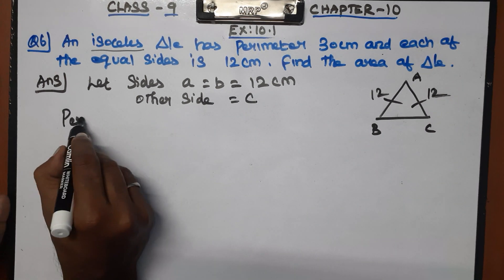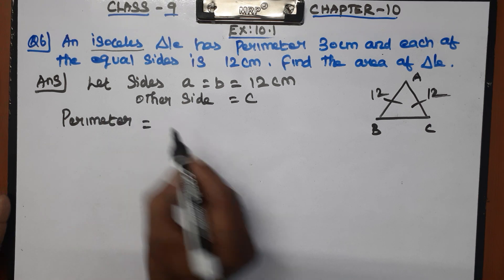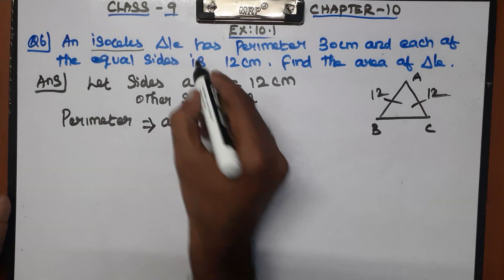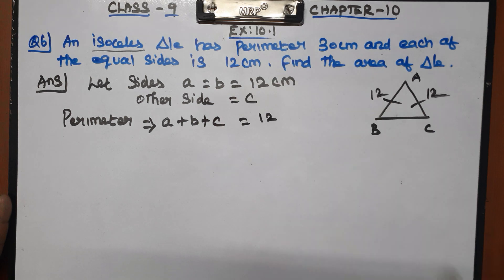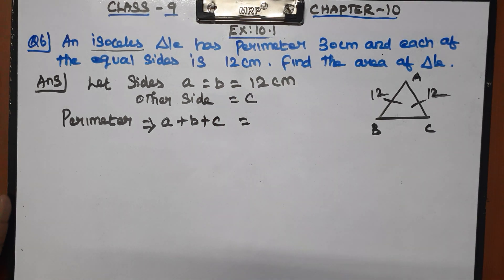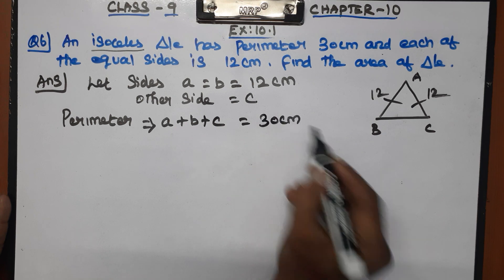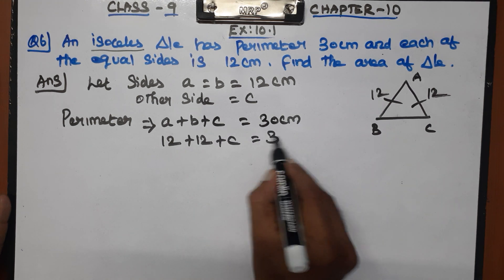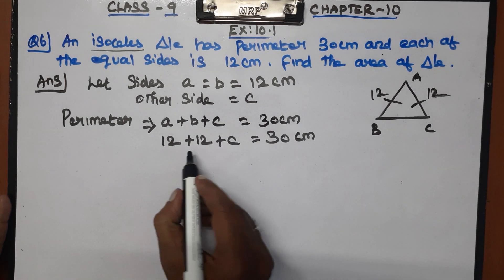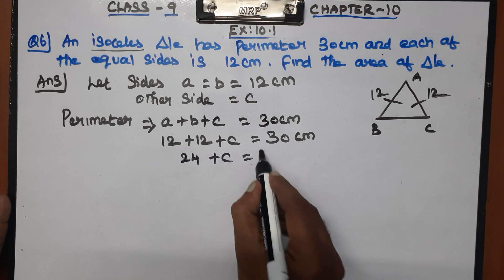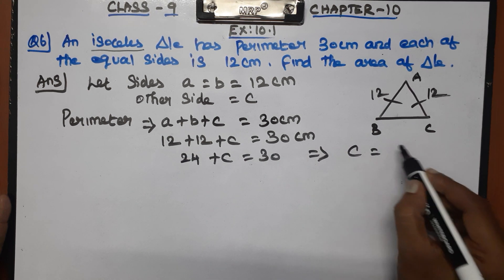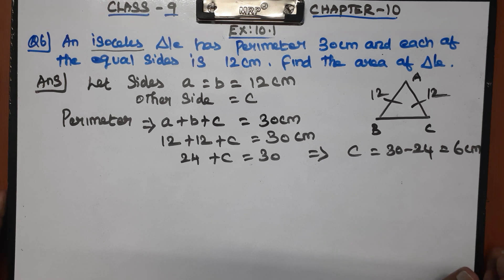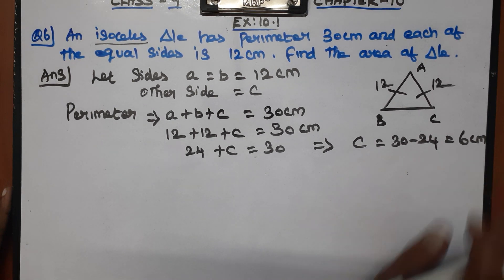From the perimeter equation: 12 plus 12 is 24, so 24 plus c equals 30, which implies c = 30 minus 24 = 6 cm. So c is equal to 6 cm.